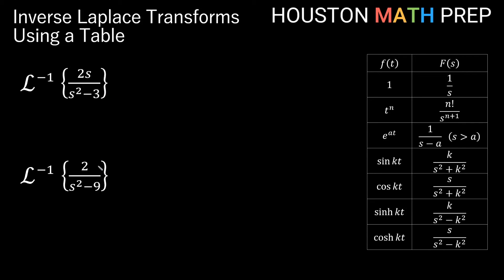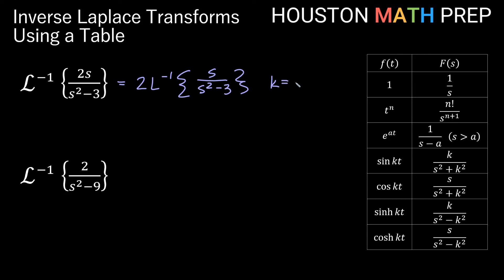For the last two examples, we have 2s over s squared minus 3 and 2 over s squared minus 9 — these use s over s squared minus k squared and constant over s squared minus k squared, so we'll use hyperbolic sine and hyperbolic cosine. The first one has an s on top, so it fits the cosh function. Bumping the 2 out front: 2 times the inverse transform of s over s squared minus 3. Here k equals square root of 3, giving us 2 cosh of square root 3 times t.